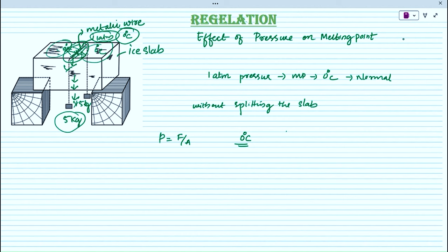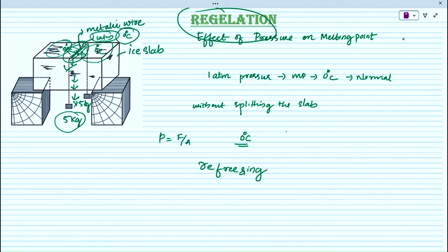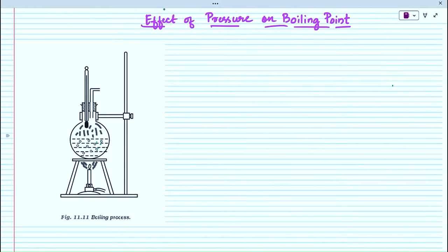Once the metallic wire passes below a region, the surface above returns to 1 atm pressure and it freezes again at 0 degrees Celsius. The ice melts under high pressure, thus the wire passes through the slab without splitting it. This phenomenon — the refreezing of ice when pressure is removed — is called regelation. For example, skating shoes have a blade with a small area, so under the skater's weight there is high pressure, the ice melts quickly, and one can skate through the snow very easily.